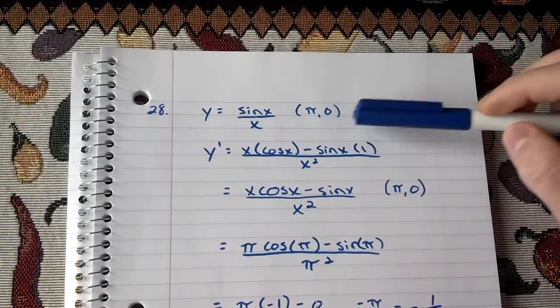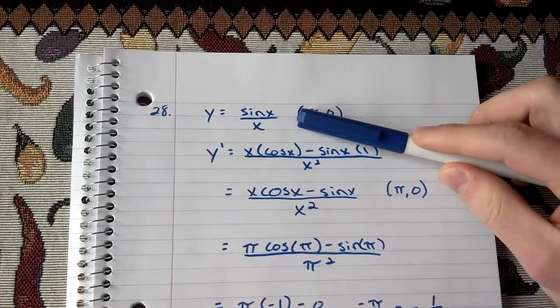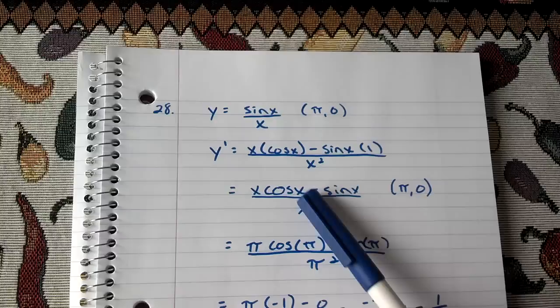So the first step is to find the derivative. We see that sine x over x, you take that and you use the quotient rule.